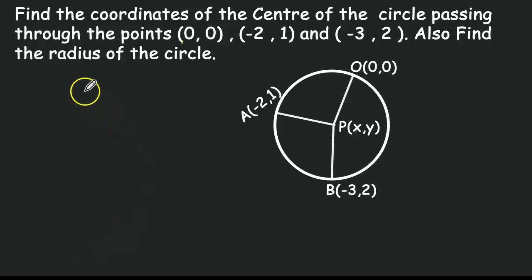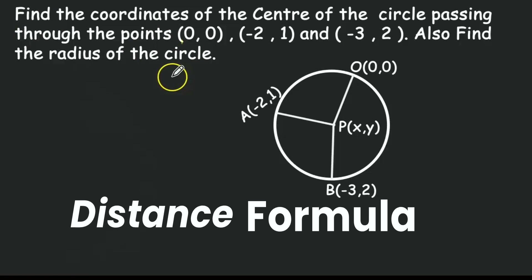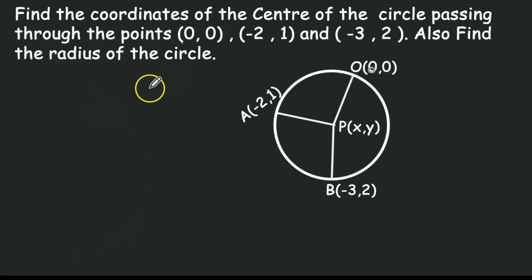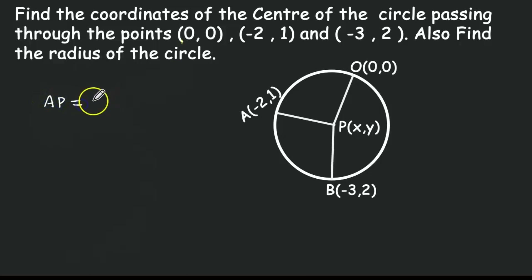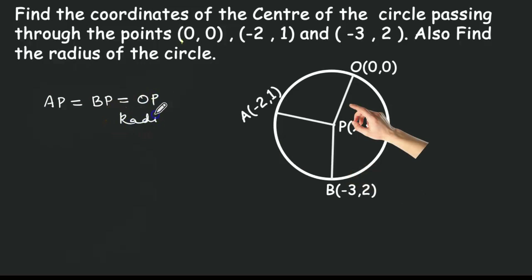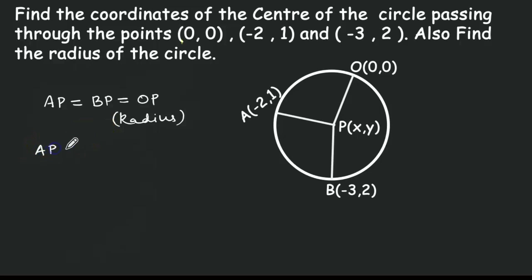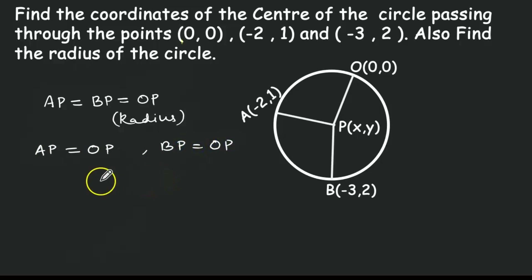Hello friends, welcome. Let us discuss a problem based on the distance formula. The question is: find the coordinate of the center of the circle passing through the points (0,0), (-2,1), and (-3,2). Also find the radius of the circle. Here AP, BP, and OP are the radii of the circle, so AP equals BP equals OP. We can write AP equals OP and BP equals OP.